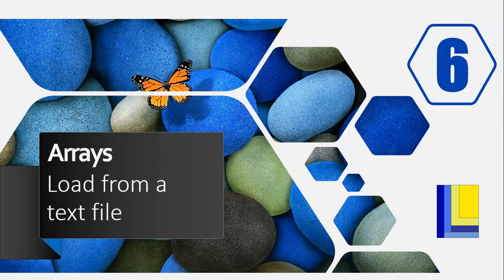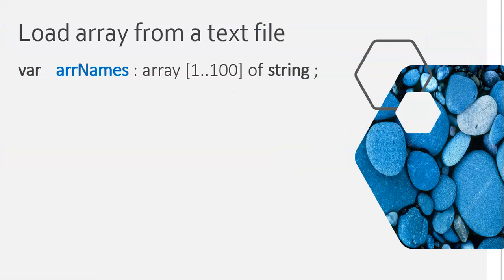This is part six of our array series, and we're going to look at how do we get data from a text file and load it into an array. We're going to start off by taking an array — let's call it array names. It goes from one to a hundred of type string, so we're going to load in some strings into this array.